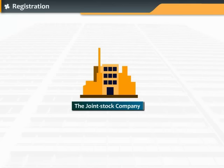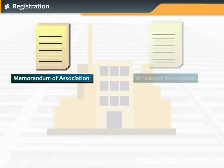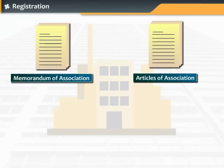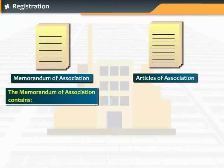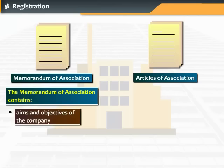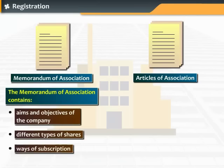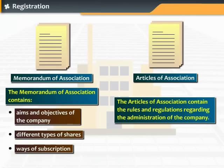Important documents required for the formation of joint stock companies are the memorandum of association and articles of association. The memorandum of association contains the aims and objectives of the company and the different types of shares and ways of subscription, while the articles of association contain the rules and regulations regarding the administration of the company.